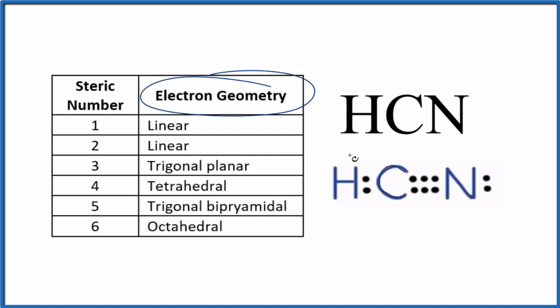So we can see that there are one, two things bonded, and there's no lone pairs. So we just have two things. We're going to have a linear electron geometry for HCN.